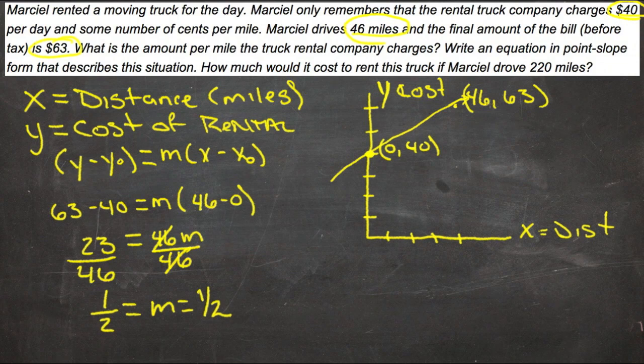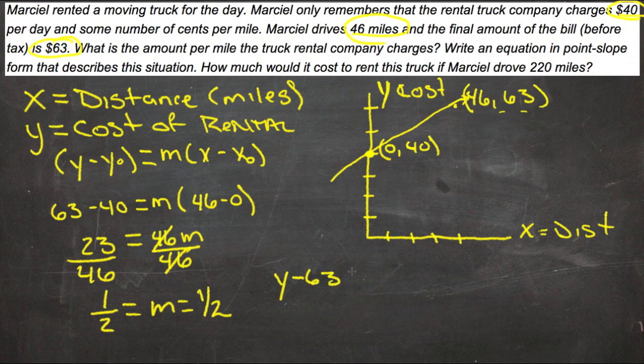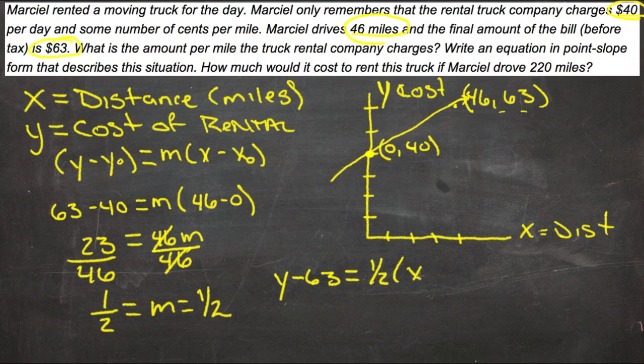We can write our equation using either point, but it would be easier to write it using one that has both values. So we'll do y minus 63 equals 1/2 times (x minus 46).